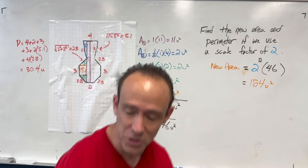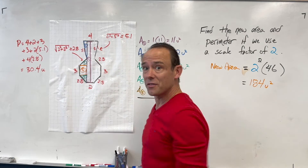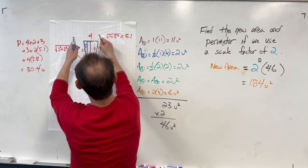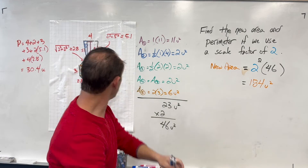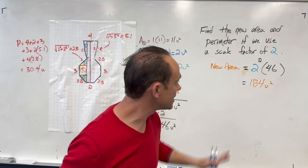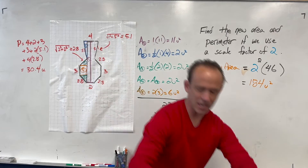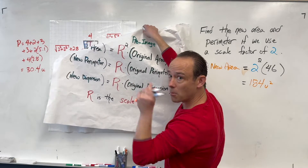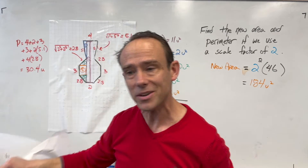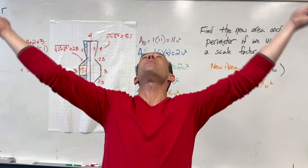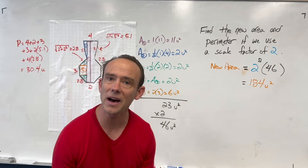This is so helpful because otherwise you'd have to redraw the vase — make each distance double, redo all the calculations — and get the same answer but it'd take much longer. You know more than just scaling dimensions. You don't have to scale dimensions and recalculate; you can just scale the area directly.